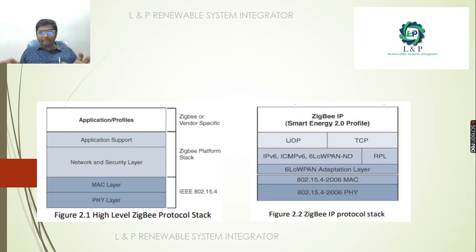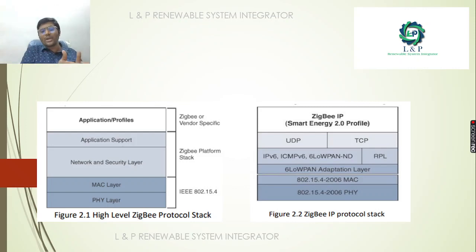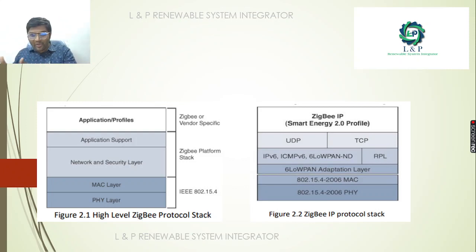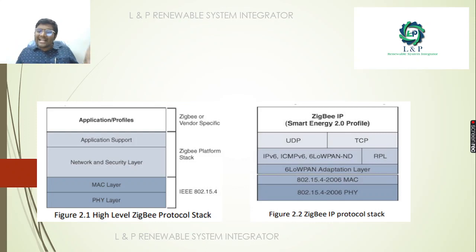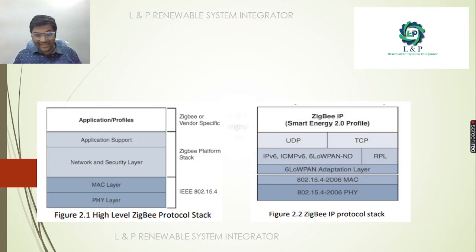Making a layer comparison between ZigBee and ZigBee IP: in ZigBee we have only physical, MAC, network, and application layers. But in ZigBee IP, as we saw earlier, it covers everything — 6LoWPAN adaptation layer, IPv6, RPL, UDP, and TCP.